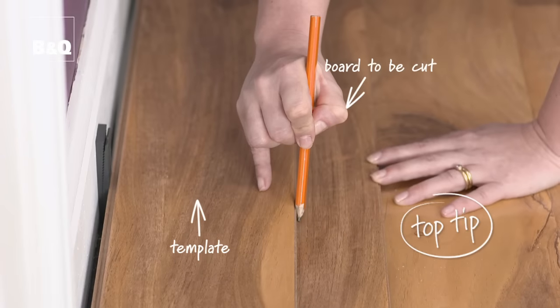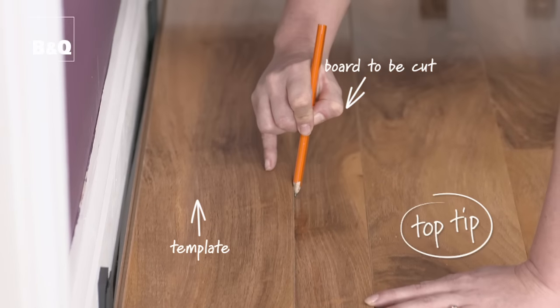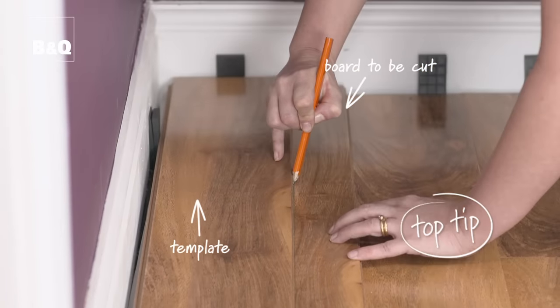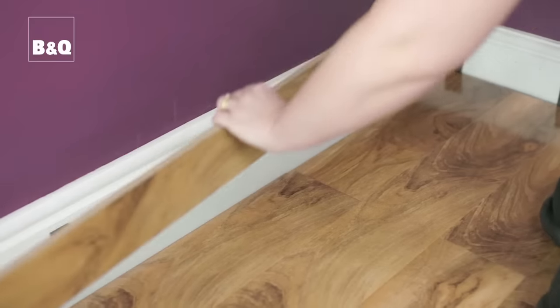Top tip, do this in the actual place the board will go, just in case your walls are slightly out. Once you've cut the whole row, slot them into place.